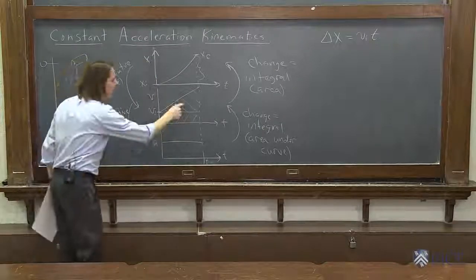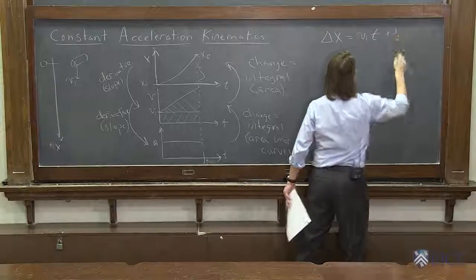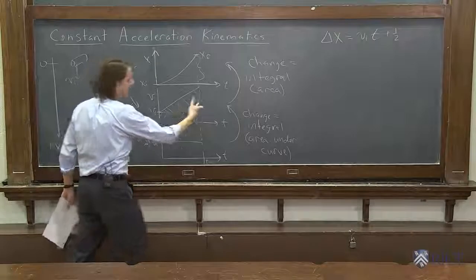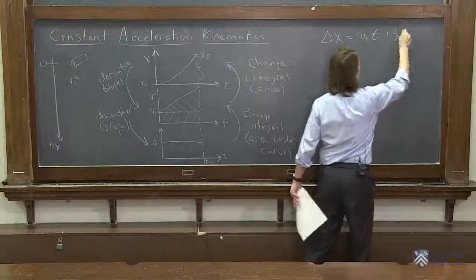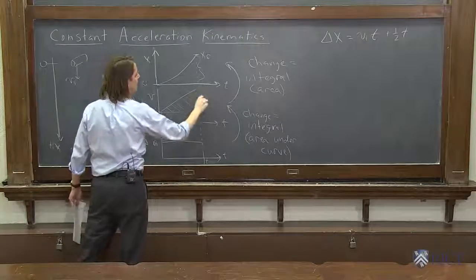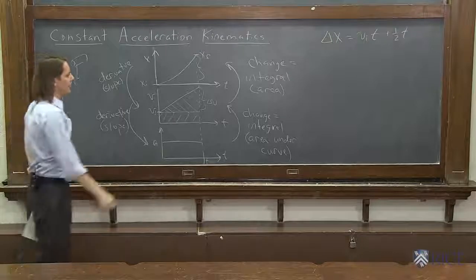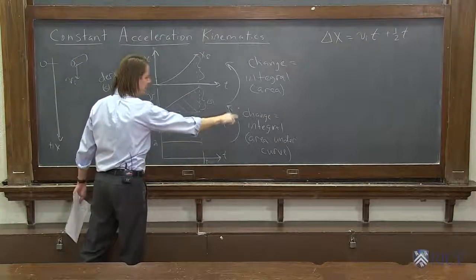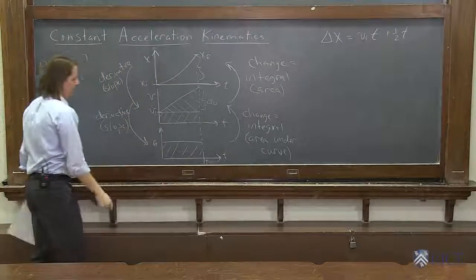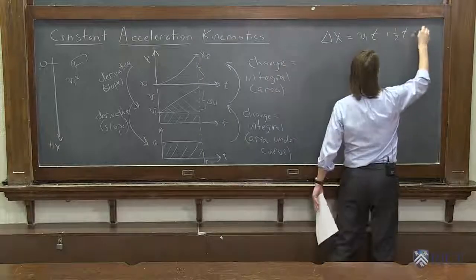And now we need the triangle. What's the area of a triangle? It's 1/2 base times height - plus 1/2. And what is the base? The base is t. Alright, 1/2 t. And what is the height? The height is the change in v - the height is delta v. But what is delta v? Oh, delta v - we've got to do this again. The change is the integral, it's the area under the curve. That's delta v. What's that area? a times t - at.